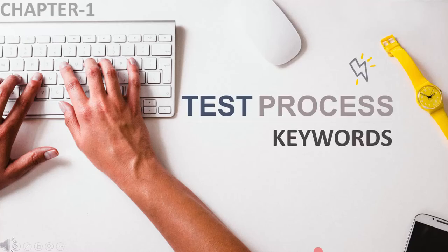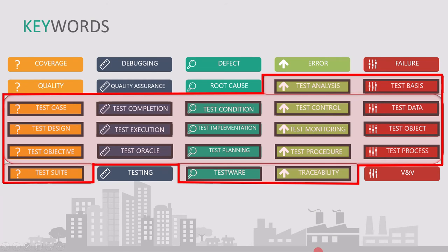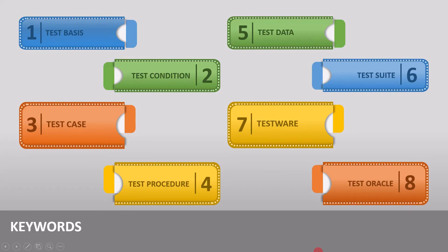In this lecture, we will address keywords related to the test process topic. These keywords are the ones we are going to cover because they are related to the upcoming topics. I will cover a few now and the remaining while addressing the topic. These are the 8 keywords you must know before we go to the test process topic. All definitions provided here are given by ISTQB itself. Along with the definition, I will provide some real examples for easy understanding. So let's get started.